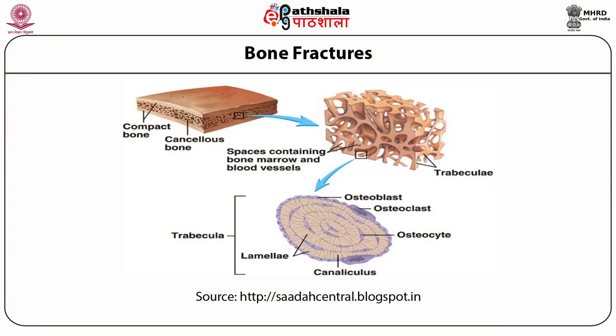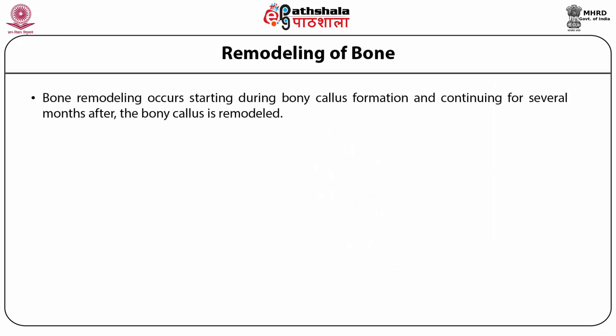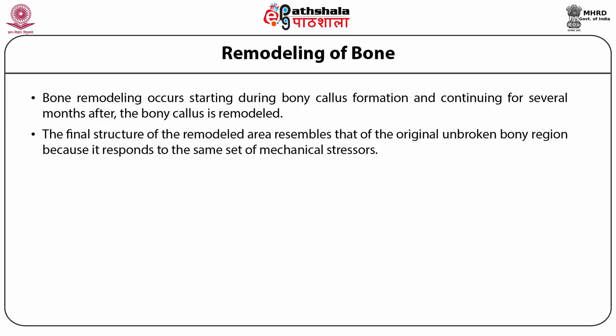The slide shows how compact bone and cancellous bone are compressed together, reflecting the different parts: osteoblasts, osteoclasts, osteocytes, canaliculi, and lamellae. These show the formation in the trabeculae, and the spaces contain bone marrow and blood vessels. Bone remodeling occurs starting during bony callus formation and continuing for several months after. The excess material on the diaphysis exterior and within the medullary cavity is removed, and compact bone is laid down to reconstruct the shaft walls. The final structure of the remodeled area resembles that of the original unbroken bone because it responds to the same set of mechanical stresses.